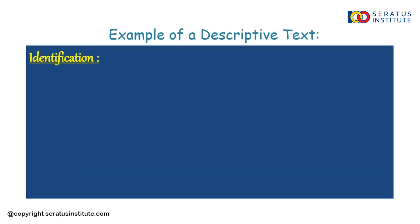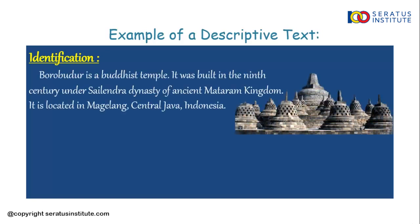This is the example of a descriptive text. The first is identification — it is about Candi Borobudur. 'Borobudur is a Buddhist temple. It was built in the 9th century under Selander dynasty of ancient Mataram kingdom. It is located in Magelang, Central Java, Indonesia.' We call this identification because it contains general information about Candi Borobudur, such as 'located in Magelang.'